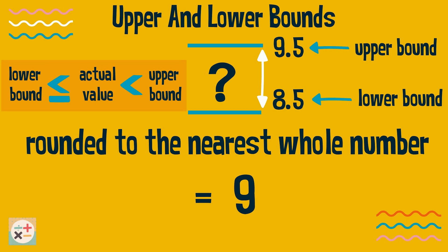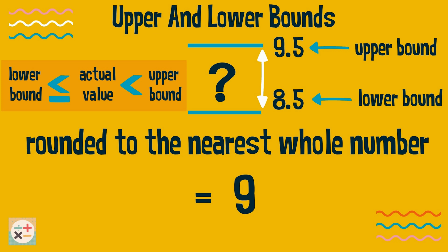It is important to remember that the actual value could be equal to the lower bound, but it can only be less than the upper bound, not equal to it. For example, in this case, the value 9.5 would be rounded up to 10, the next whole number.